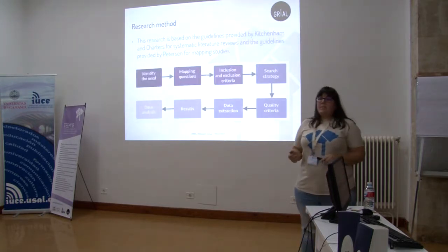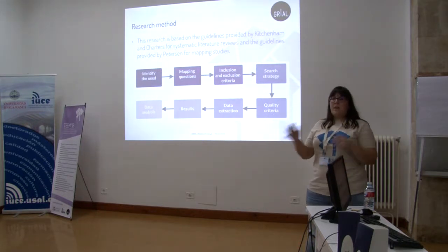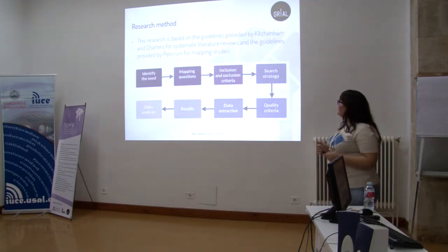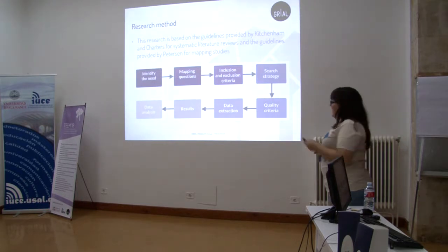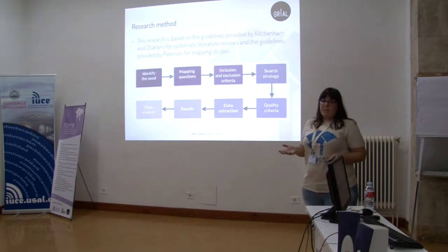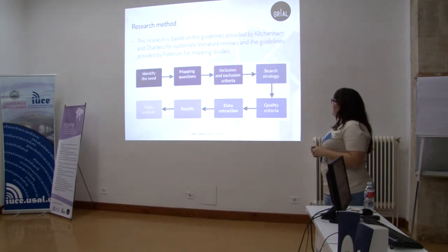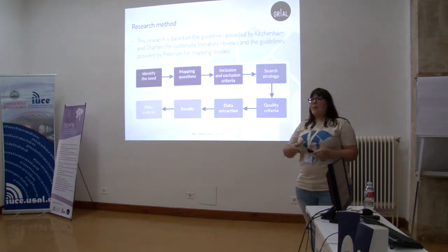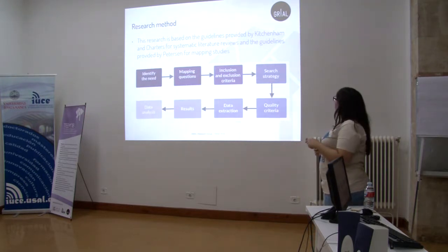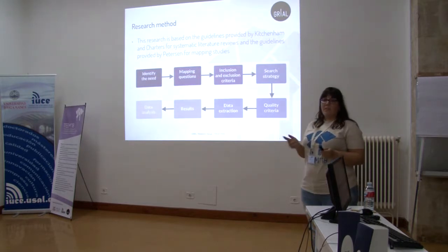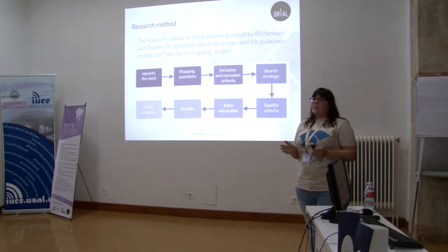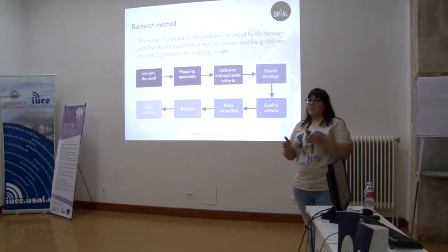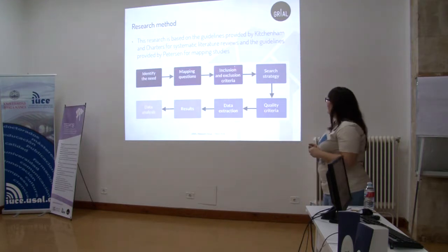To carry out this mapping study, which was part of the systematic literature review about software ecosystems, I followed this research method. First, I identified the need to carry out the study. After that, I defined the mapping questions — focused especially on quantitative questions about authors, years, and other quantitative aspects. The next step was to define inclusion and exclusion criteria. The main inclusion criterion was that studies followed the methodology of systematic literature review or mapping review.